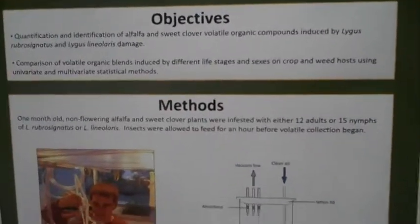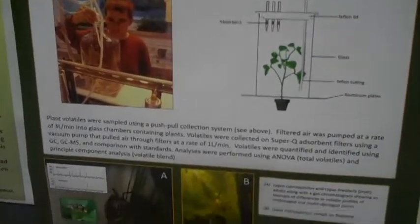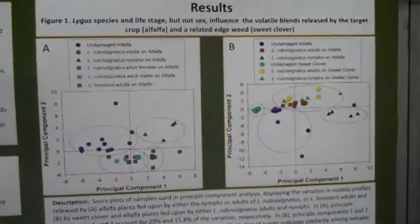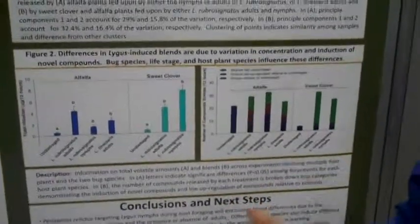I put plants in glass chambers and collected volatiles on a chemical absorbent called SuperQ, then loaded those onto GC or GC-MS to determine amounts and identities of volatiles.